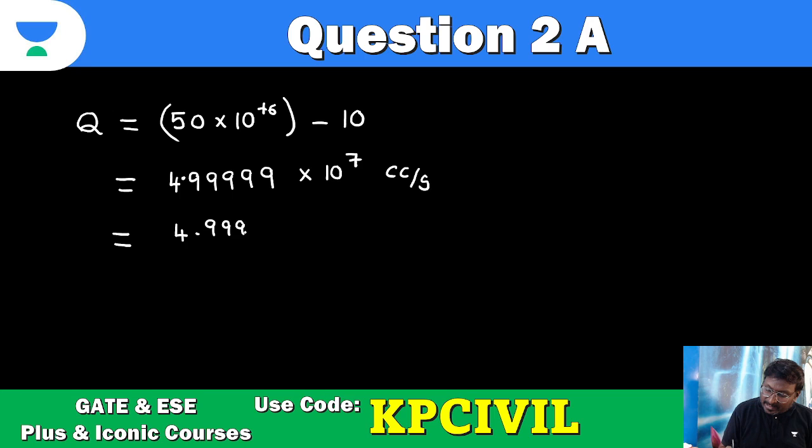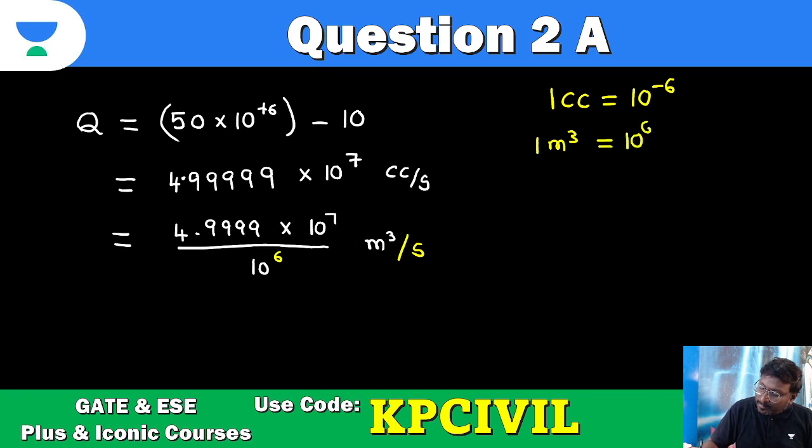Cc per second, so 4.9999 into 10 power 7 by 10 power 6. 1 cc is 10 raised to minus 6 meter cube. 1 meter cube is 10 power 6 cc. So you can take divided by 10 power 6. So you get 49.999 something meter cube per second. We can make it 50 meter cube per second. This is the answer.